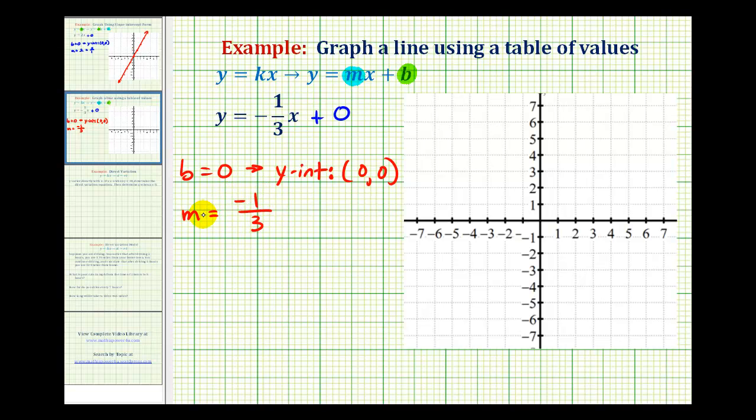And that should be helpful because remember the slope tells us the ratio of the rise to the run, or the ratio of the vertical change to horizontal change.